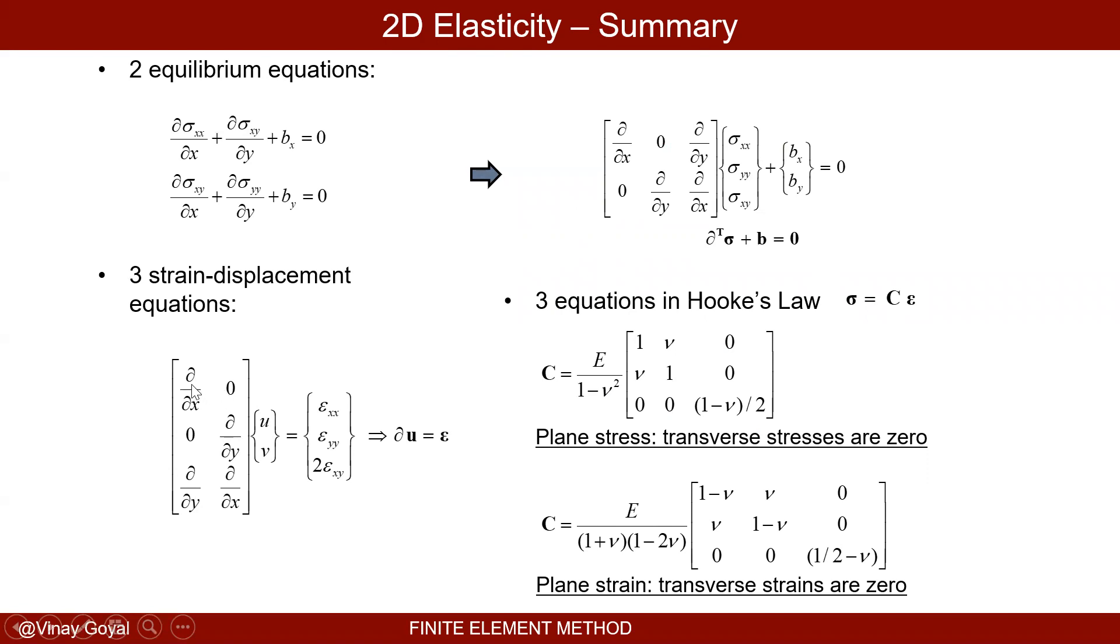And the strains are basically partial of u with respect to x just like we had before. Epsilon yy is just partial of v with respect to y, and partial xy which is a shear is partial of u with respect to y plus partial v with respect to x.